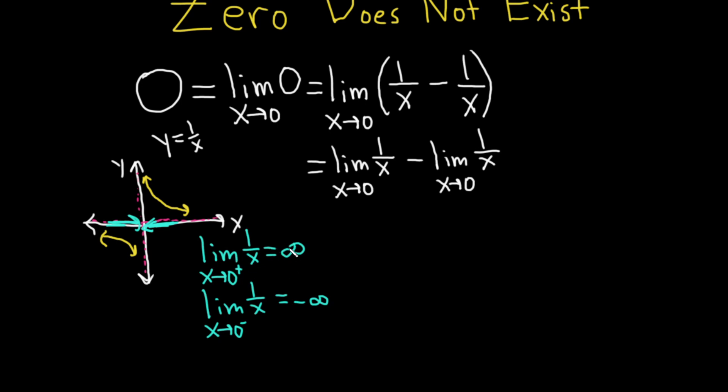So because this one approaches infinity and this one approaches negative infinity, what do we do for the regular limit or the two-sided limit? Well, in this case we really can't say anything about this. So this limit here, this limit here, the limit as x approaches zero of 1/x.